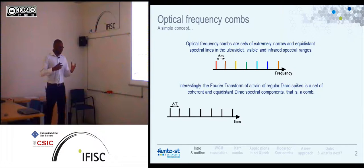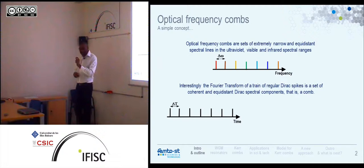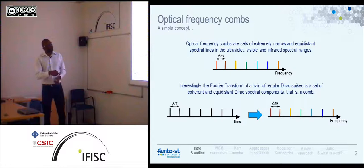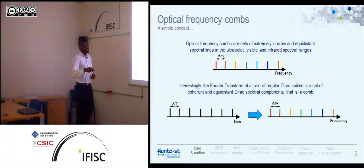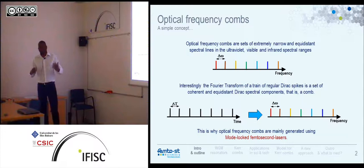There is a very intriguing mathematical fact: if you consider in the time domain a train of narrow pulses — for theoretical purposes you can consider these are Dirac pulses — a regular train where the pulses are separated by delta-t, then when you go to the Fourier spectrum you obtain an optical frequency comb where the spectral separation delta-omega is 2-pi over delta-t. So if in the time domain you have very narrow regularly spaced pulses, when you take the Fourier spectrum you obtain an optical frequency comb.